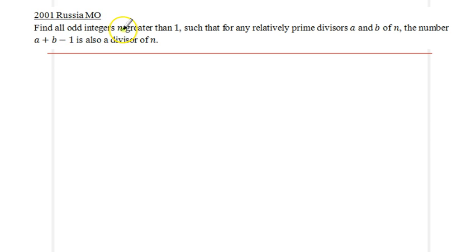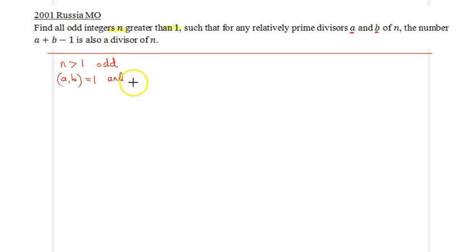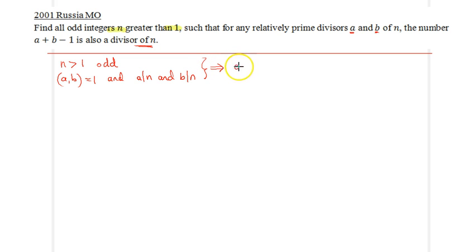Find all odd integers n greater than 1, such that for any relatively prime divisors a and b of n — so gcd(a,b)=1, a divides n, and b divides n — this must imply that a plus b minus 1 is also a divisor of n. We would like to find all such numbers n from the conditions given in our problem.